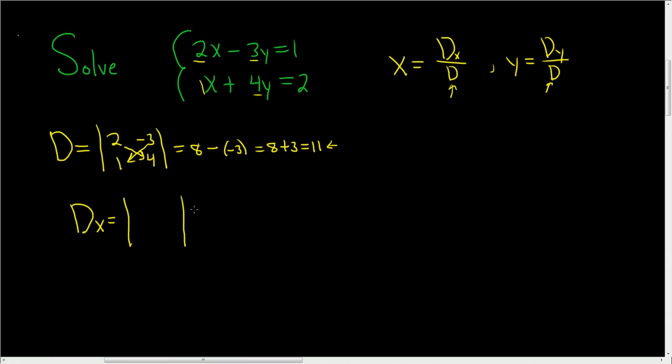Now the trick to memorize big D sub X is you just look at the X's here, and you replace them with the 1 and the 2. And then you keep the Y's, so negative 3, 4. So this is 1 times 4, which is 4, minus negative 3 times 2, which is negative 6. 4 plus 6 is 10.